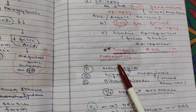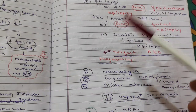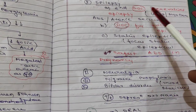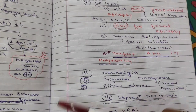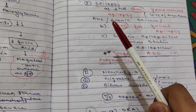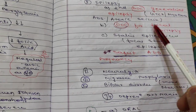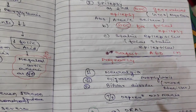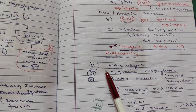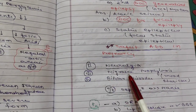Answer in the comment box: what is the first drug of choice for generalized epilepsy, and which is the first-line drug for focal epilepsy? The second indication is neuralgia. The third indication is migraine prophylaxis, because of sodium channel inhibition.